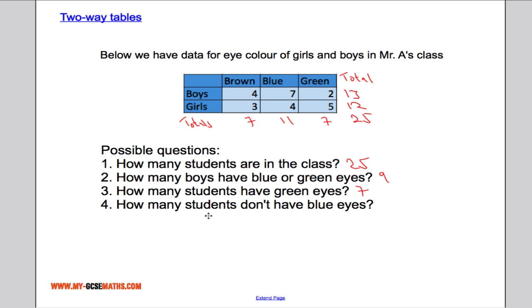And one more question. How many students don't have blue eyes? That means they must have brown or green eyes. And there's seven brown-eyed people, seven green-eyed people. So there are 14 students who don't have blue eyes.